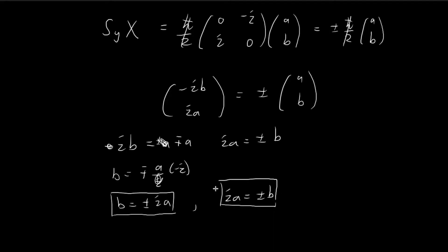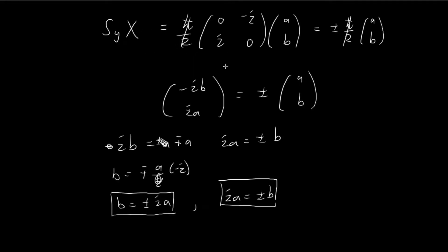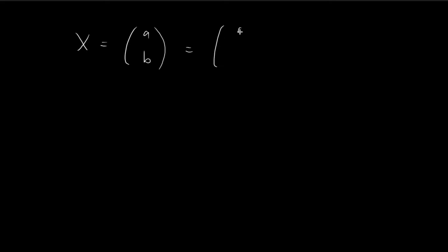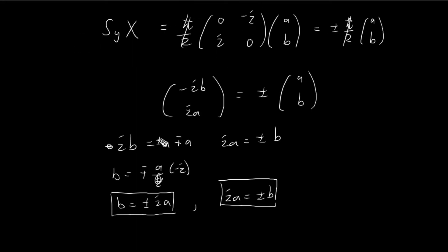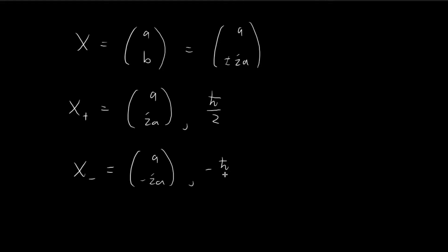This tells us what our eigenvector should be. If x = (A, B) is to be an eigenvector for Sy, then B must equal ±iA. The plus case corresponds to the eigenvector associated with eigenvalue ℏ/2 (spin-up), and the minus case corresponds to the eigenvector associated with eigenvalue −ℏ/2 (spin-down).